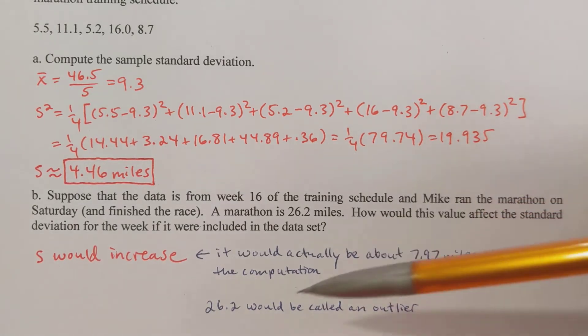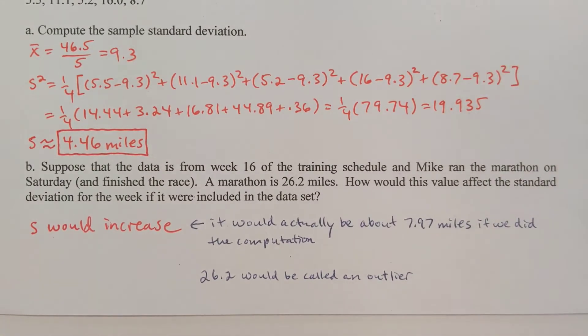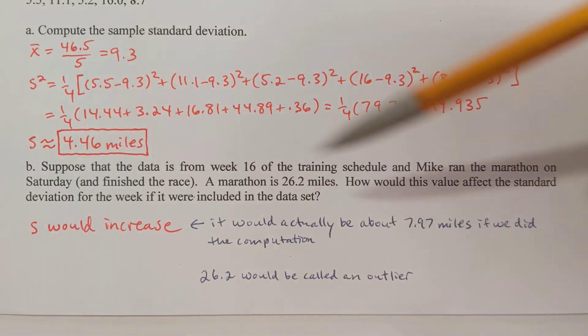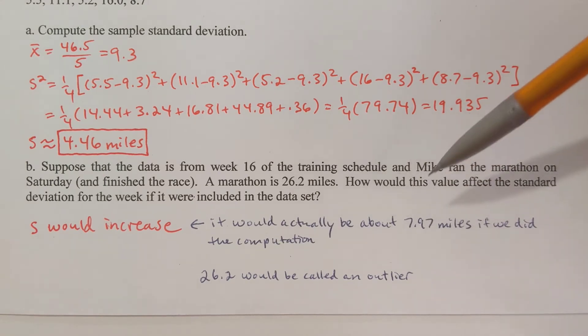Now the number 26.2 is called an outlier. We're going to talk about outliers a little later on in the next section. An outlier would be like an extremely distant number from the pack, and outliers can seriously affect the mean and the standard deviation. The standard deviation would be more than three units bigger if you were to accidentally use that or whatever.